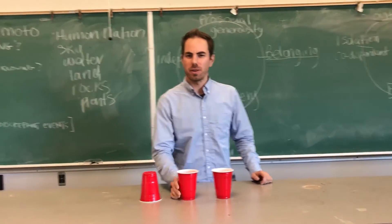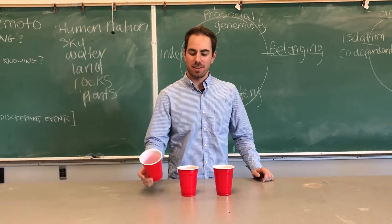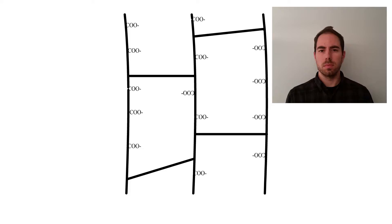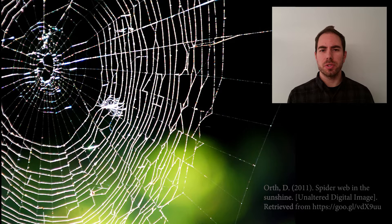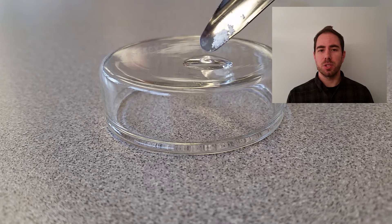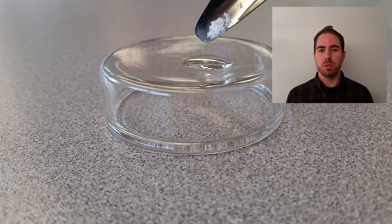So how come that didn't work? Where'd the water go? Inside one of the cups, we had a super absorbent polymer. It looks like this. And if you look closely, it looks kind of like a spiderweb — except instead of catching flies, this catches water molecules.